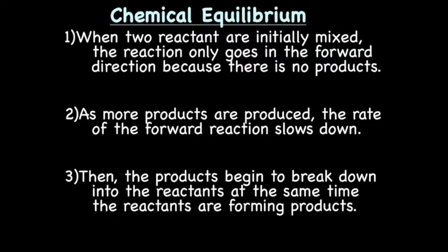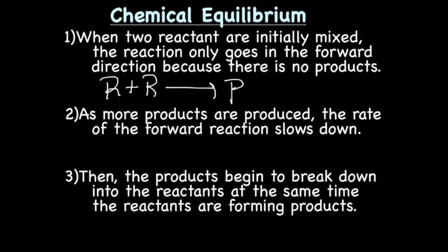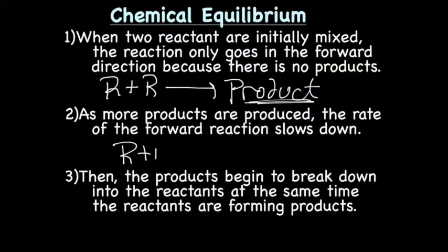Next up, chemical equilibrium. When you start a reaction, you start with reactants — in this case, two reactants. You mix them, so at the beginning, all you have is reactants. After a certain amount of time, you start making product. As more products are produced, the rate of the forward reaction slows down. As you start making more and more product, I'm drawing a smaller arrow to show that the reaction is slowing down.